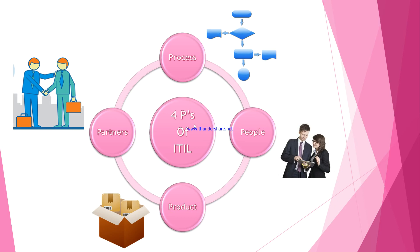There are some important characteristics of the Process. The first characteristic is Measurable — whatever process you design should be measurable and performance driven. The second characteristic is Specific Result — whenever you execute a process, it should have a desired, specific output at the end. The third characteristic is Customer — any process designed should be customer-centric, meeting customer expectations.